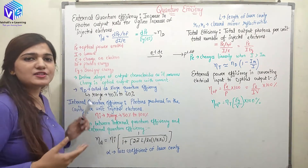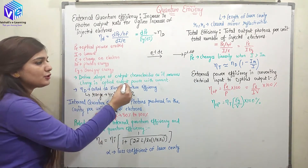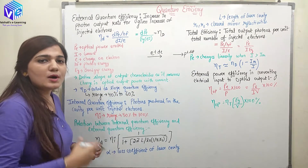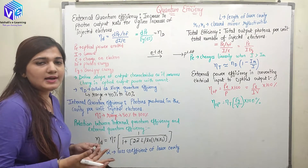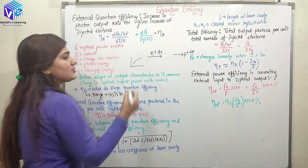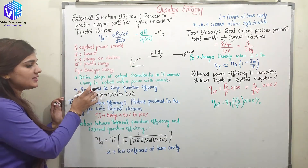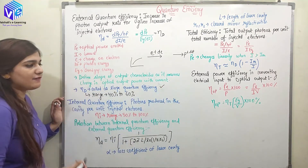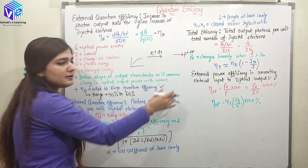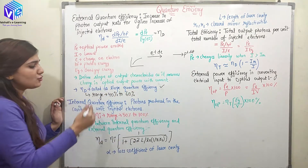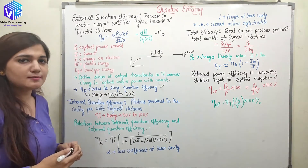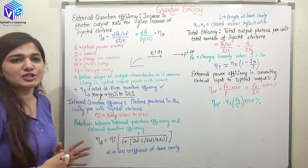External quantum efficiency is used to define the slope of the output characteristic. In the output characteristics we have power versus input current. The power versus input current graph has a slope determined by eta D, and this is the reason eta D is also called the slope quantum efficiency. It measures the change in optical output power with change in current. It has a range of 40% to 60%, which is relatively low and we are working on increasing this efficiency.